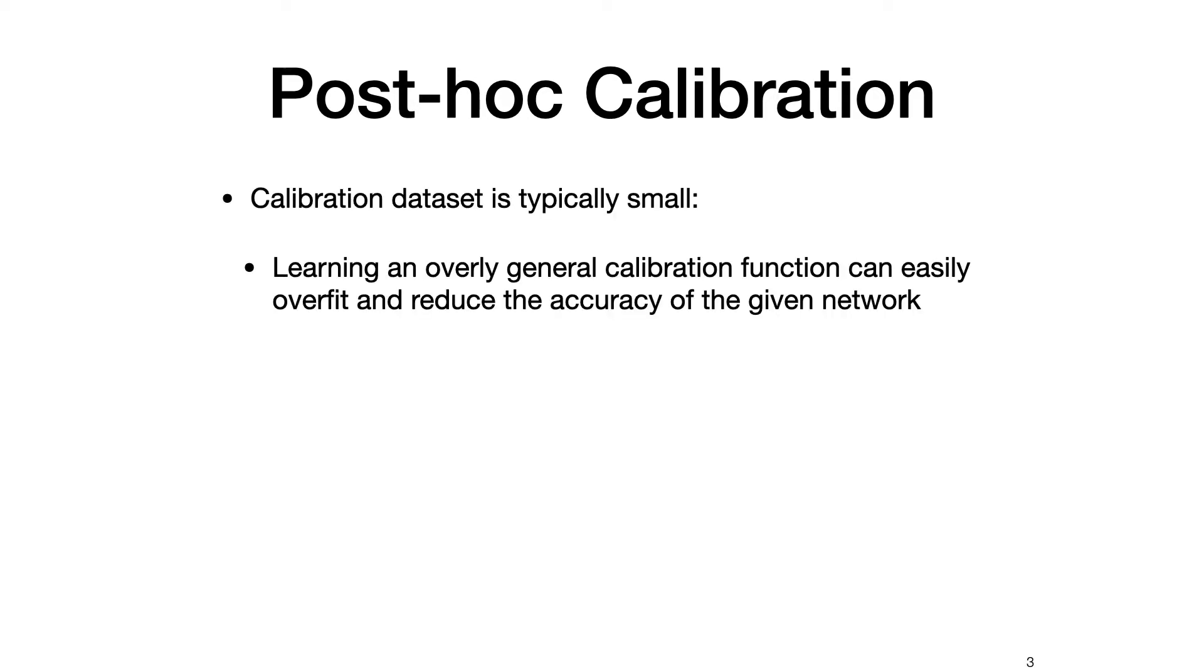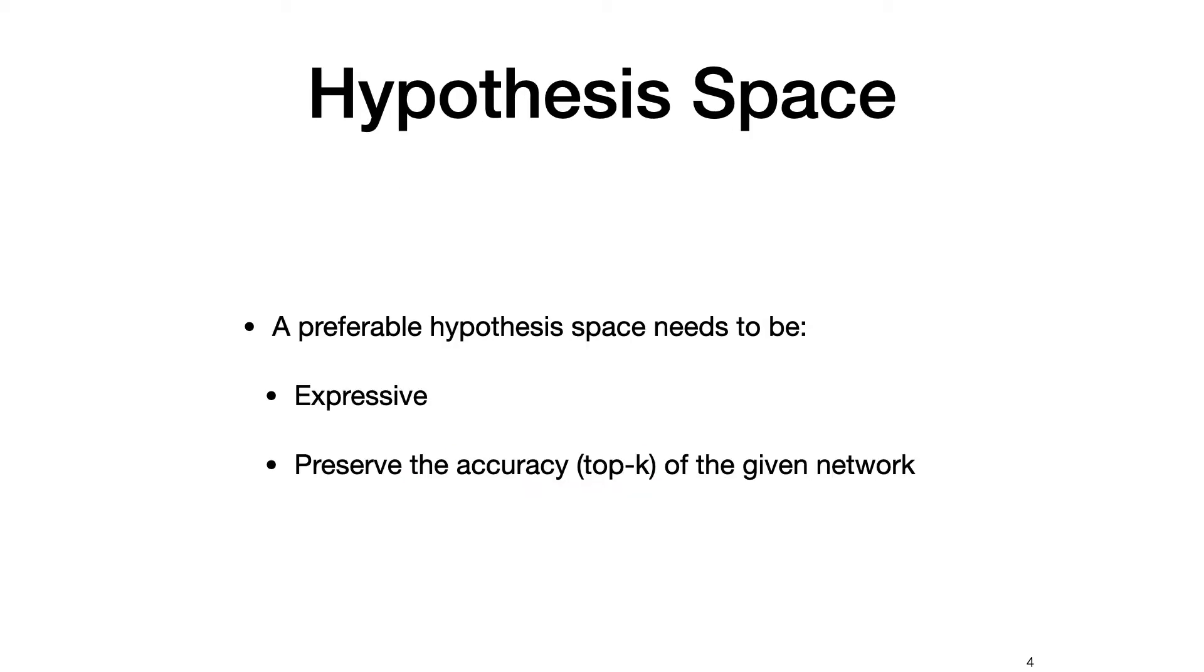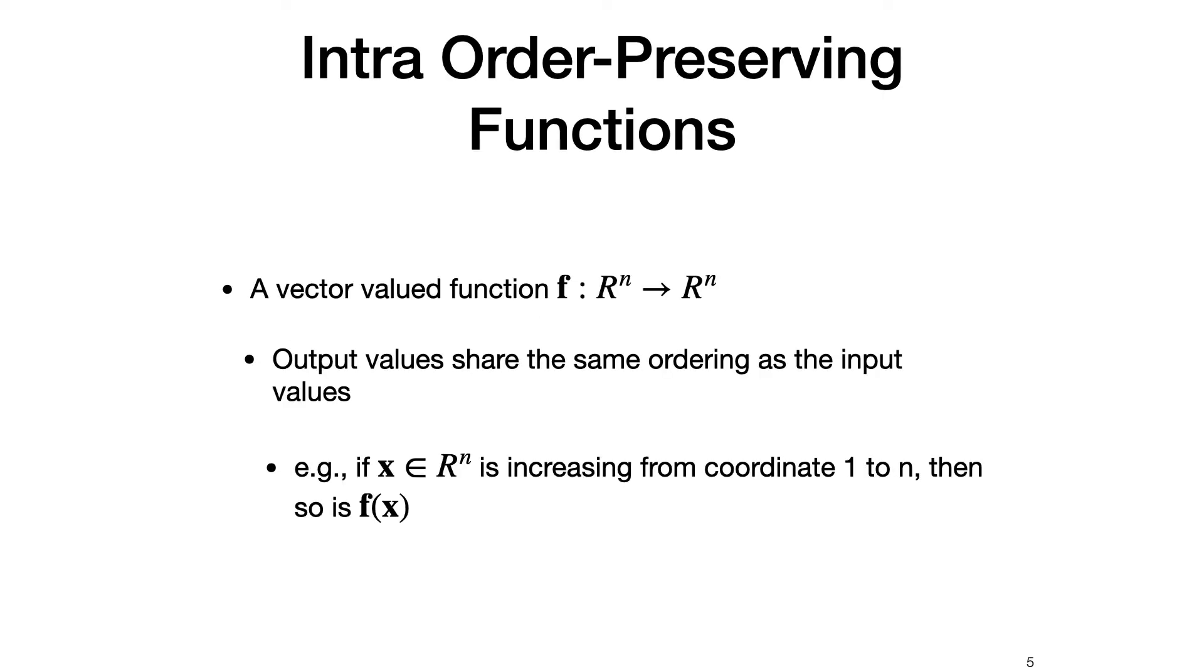The calibration dataset usually has a small size, so learning a general function can easily overfit to the calibration data and reduce the accuracy of the base network. So our preferable hypothesis space for calibration functions needs to be expressive enough and at the same time preserve the top-k accuracy of the given base model. This motivates us to define the intra-order preserving functions.